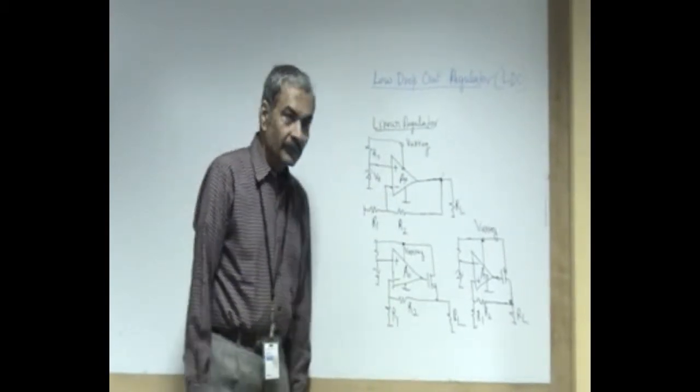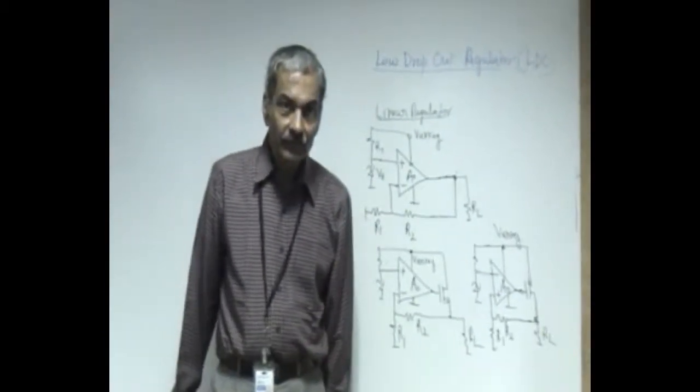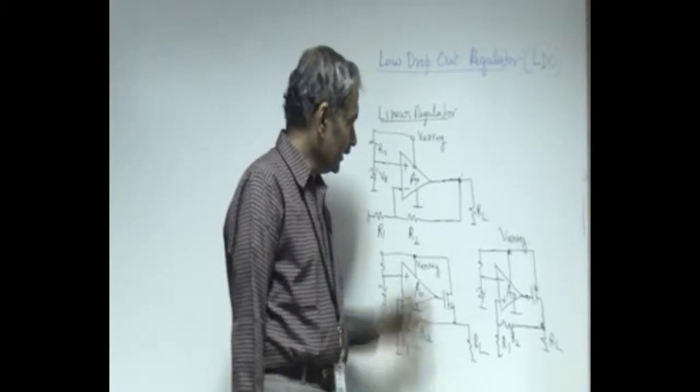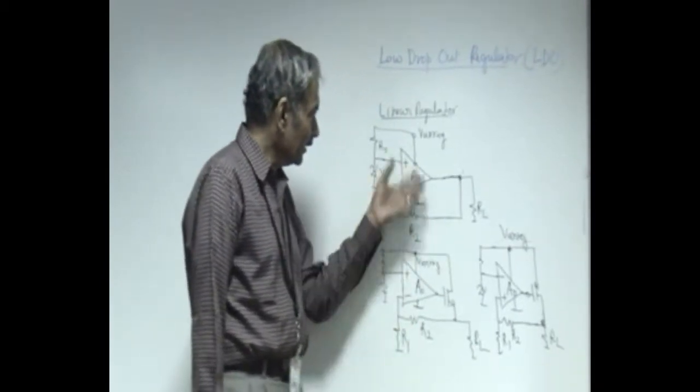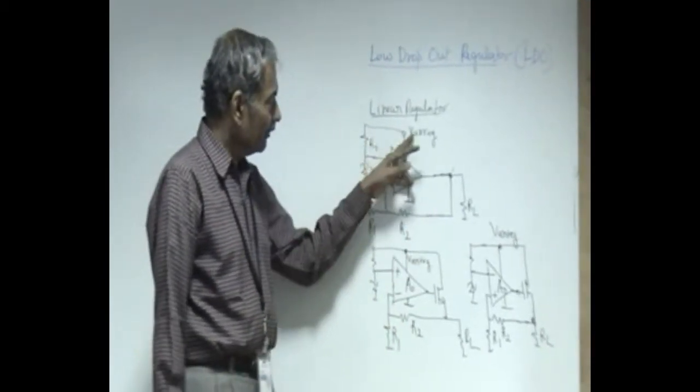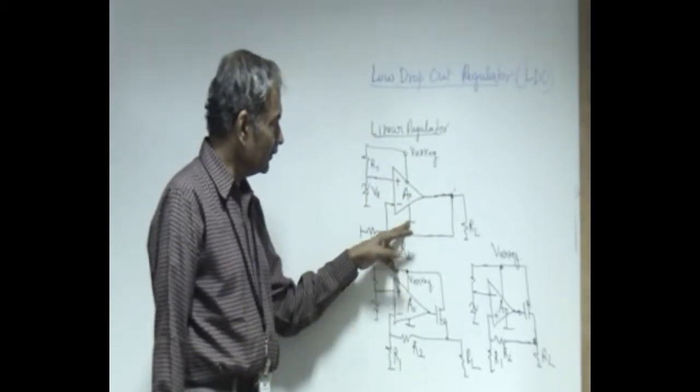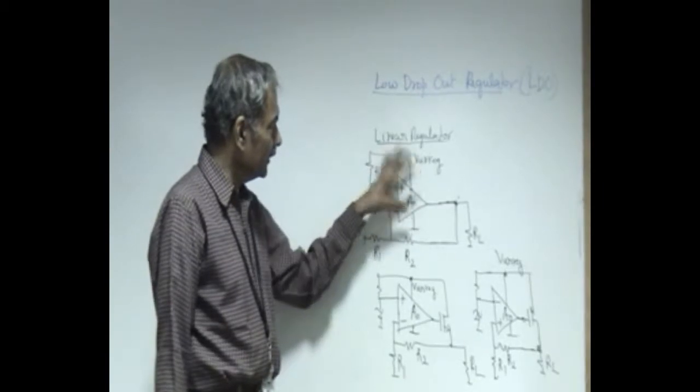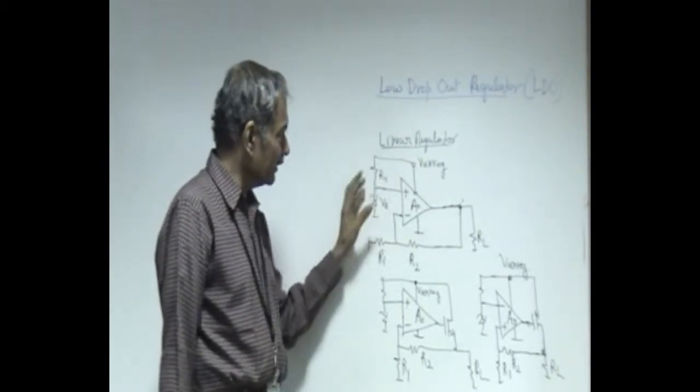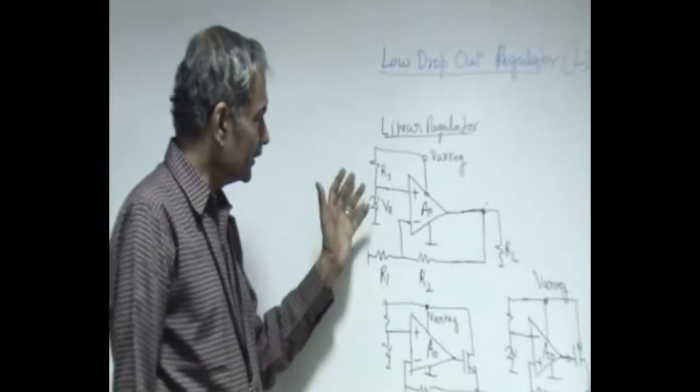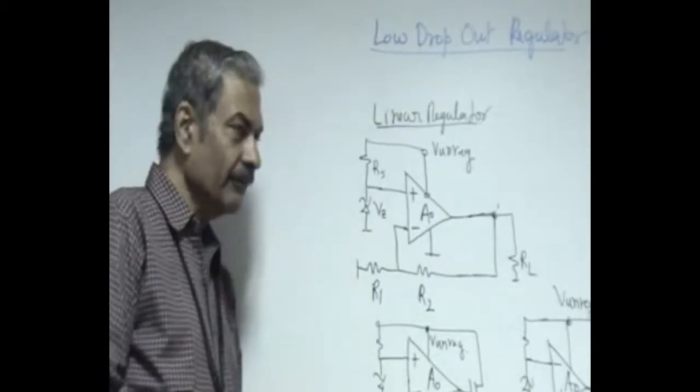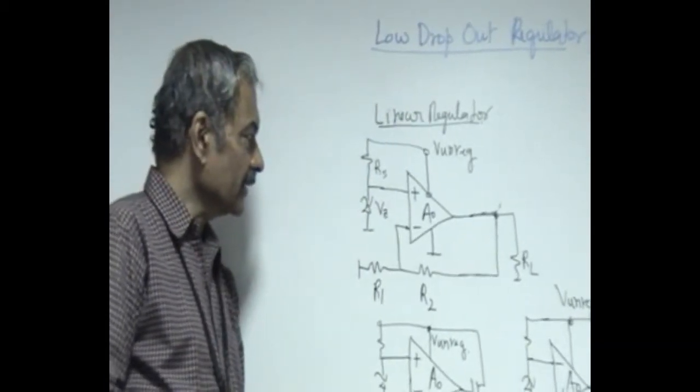Linear regulator is based on the feedback principle of a non-inverting amplifier with one supply being unregulated, the other being ground. We are deriving the reference from the unregulated supply. Let us say there is circuitry to make it independent of supply, temperature, etcetera.